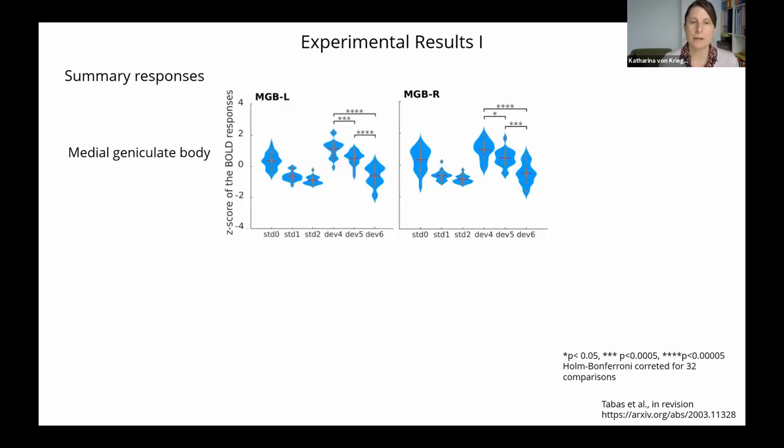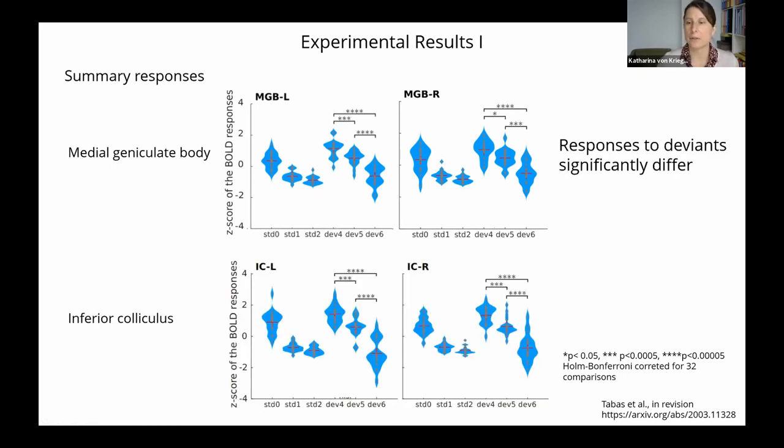And here I show you the experimental results. These are the summary responses in our regions of interest, which are bilateral MGB and inferior colliculus. These are the responses, the broad responses, in the medial geniculate body, and here the differences between the deviant four, five, and six positions. And as you can already see here, there are significant differences between the deviants. And this is the case for the left and the right side, as well as for the inferior colliculus of the left and the right.